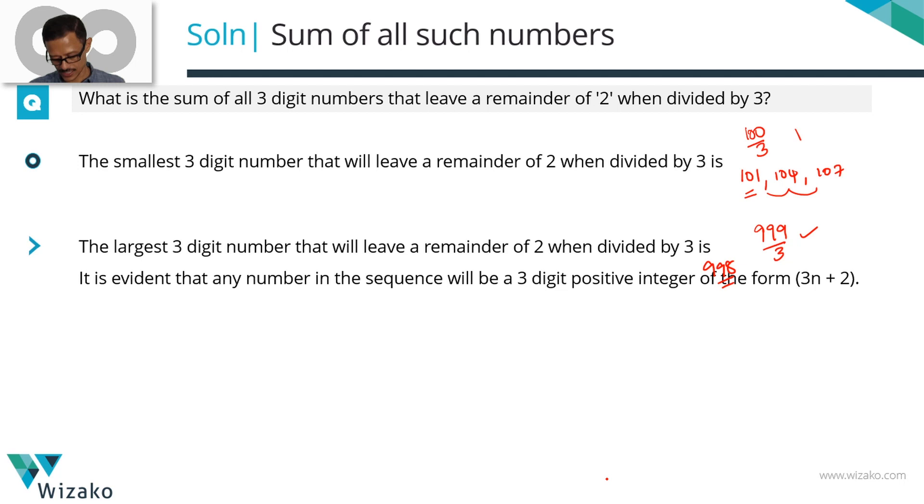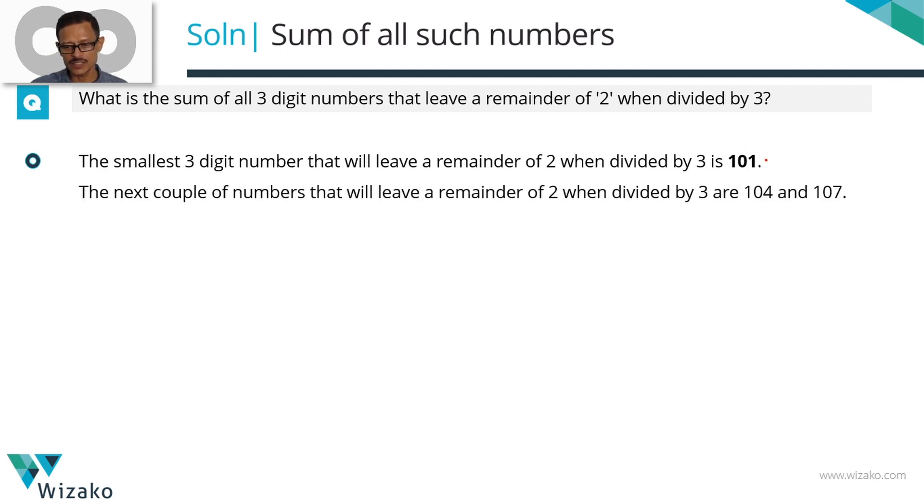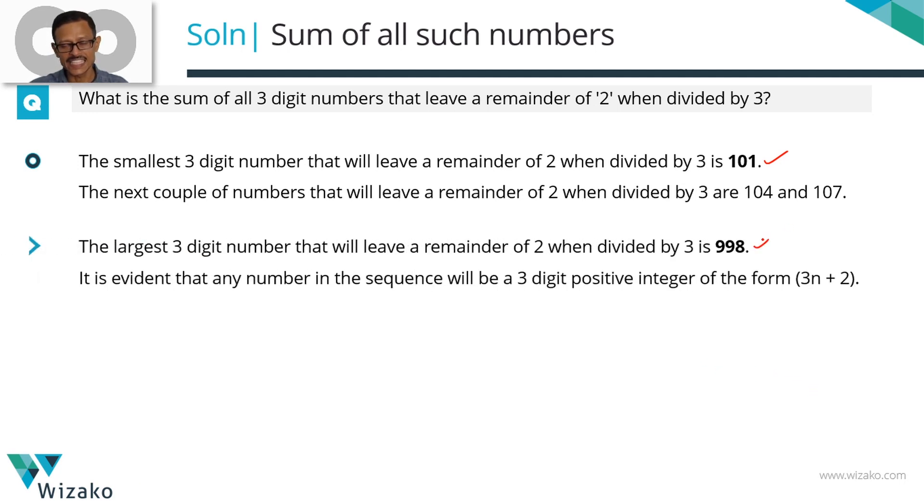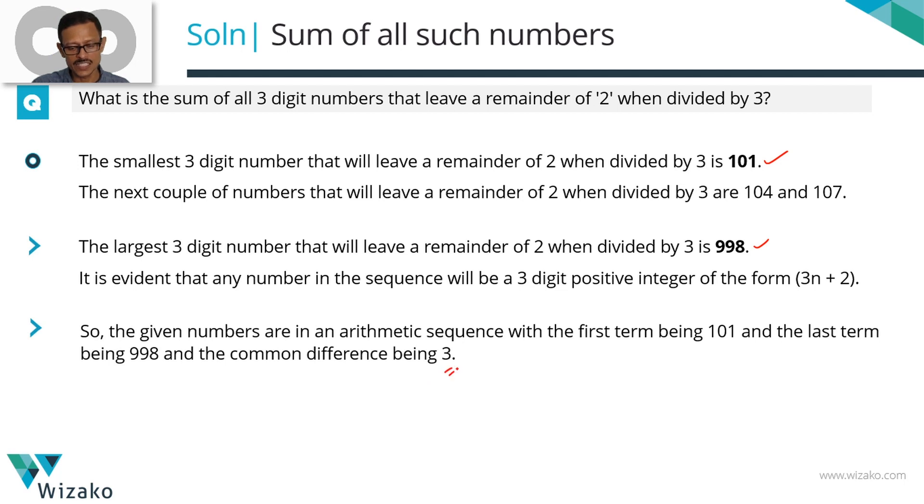Let's quickly recap this in printed form. The smallest number in the sequence is 101. The next numbers are 104, 107, 110 and so on. The largest number we computed to be 998. These numbers are of the form 3n plus 2. We know the first term, the last term, the common difference, and we know the sequence is in arithmetic progression because 101, 104, 107 have a common difference of 3.